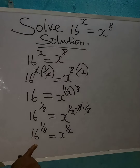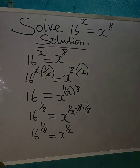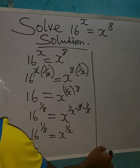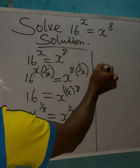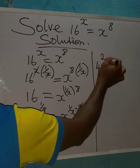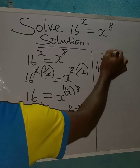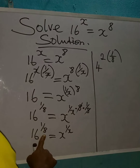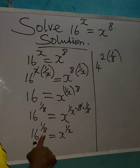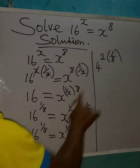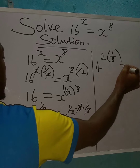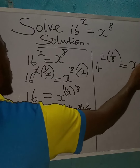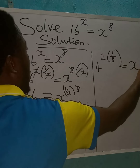Now, 16 is equal to 4 squared — that is 4 times 4. So I can continue from there and write 4 squared to the power of 1 over 8, because the power 1 over 8 still appears, and 16 is 4 squared. This is equal to x to the power of 1 over x.